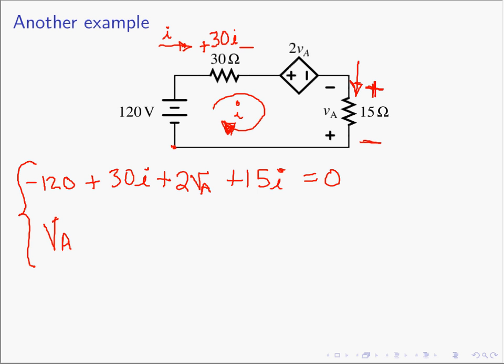We need to express VA in terms of the circuit variables. VA is defined as the voltage plus to minus as given on the circuit, and we can see that's simply negative 15I. Taking these two equations and two unknowns and solving the system, we find I equals 8 amperes. With I equals 8 amperes, we can find the power absorbed by each element, and verify by summing all powers absorbed, which should equal zero.